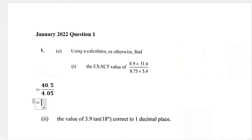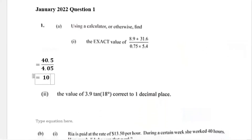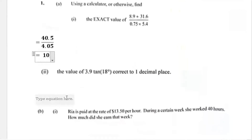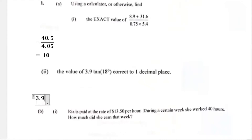So 10 is our answer for part a1. Part two says, using a calculator, find the value of 3.9 multiplied by tan 18 degrees, correct to one decimal place. What we're going to do is first find tan 18, so we have 3.9 multiplied by tan 18, and when you put tan 18 in your calculator you get 0.3249.